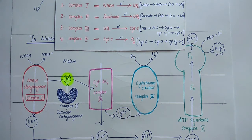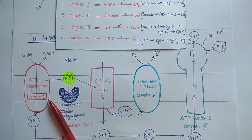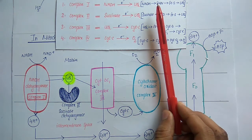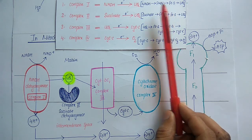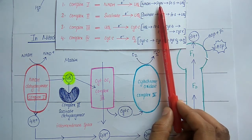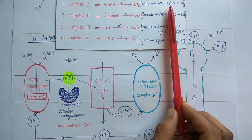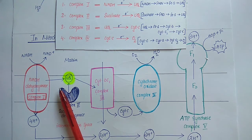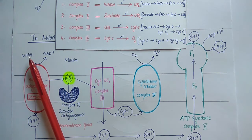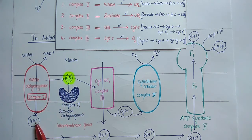Complex 1, also known as NADH dehydrogenase, contains electron carrier cofactors FMN and iron-sulfur centers (FES). It transfers electrons from NADH to ubiquinone through FMN and FES — first from NADH to FMN, then to FES, and finally to ubiquinone. During this transfer, four protons are pumped from the matrix to the intermembrane space for every pair of electrons passing through this complex.